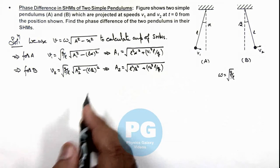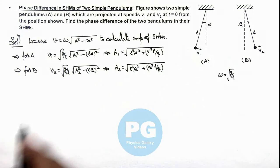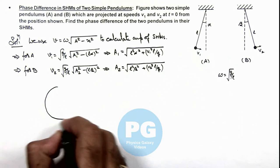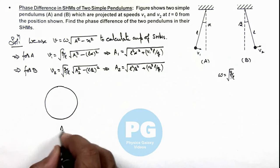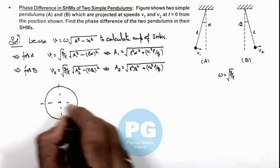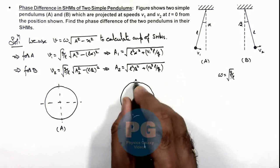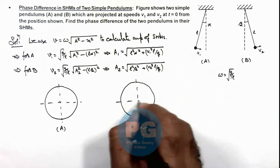And as we have calculated the amplitudes, we can map the two SHMs on circles. So this is the circular representation of SHM of A, and this is the circular representation of SHM of B.